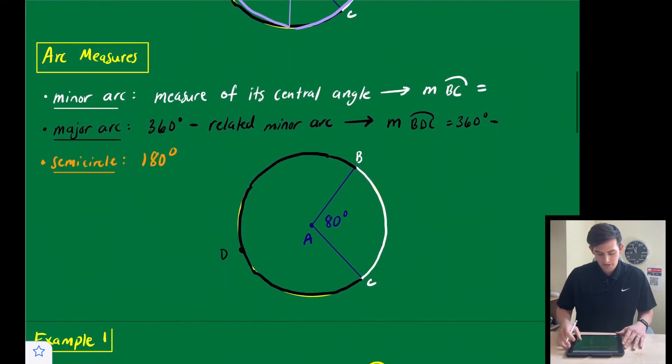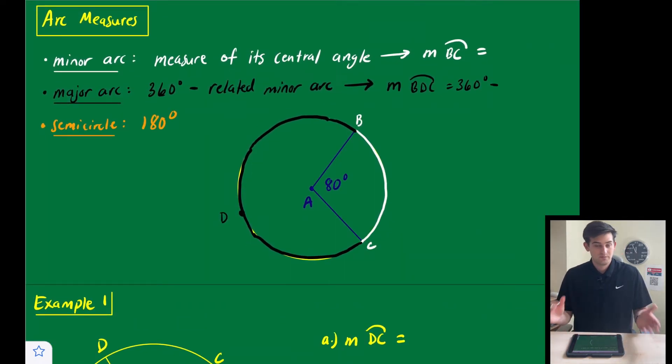All right, so let's talk about arc measures. The minor arc is pretty simple, it's just the measure of its central angle. So here in this case with this diagram, we've got our central angle with a measure of 80 degrees, so our minor arc BC would also just be 80 degrees.